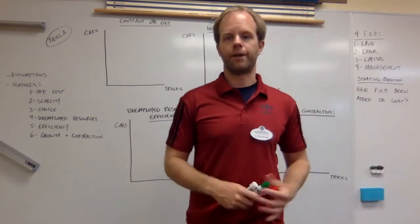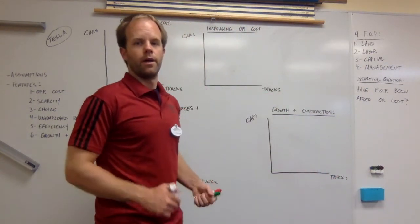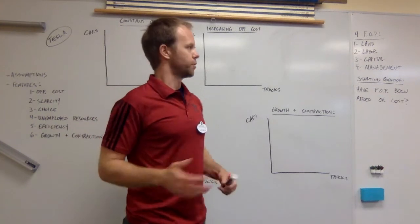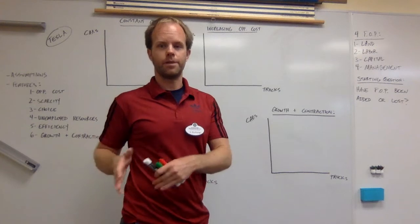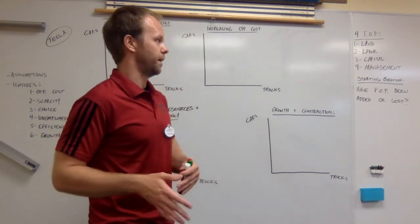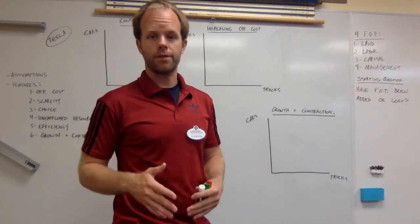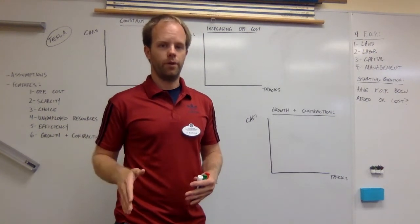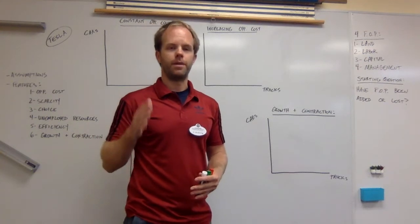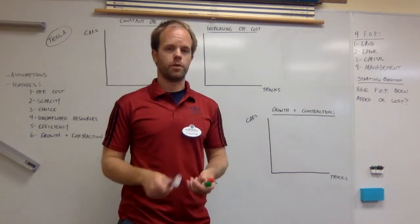Here are our four factors of production: land, labor, capital and management. Those are all pretty self-explanatory with the exception of capital and management. There's a distinction that needs to be made there. Capital, think of that as like physical assets. I'm currently recording this video on the school computer. That is a piece of capital of the school. Or this whiteboard behind me, that's a piece of capital of the school.